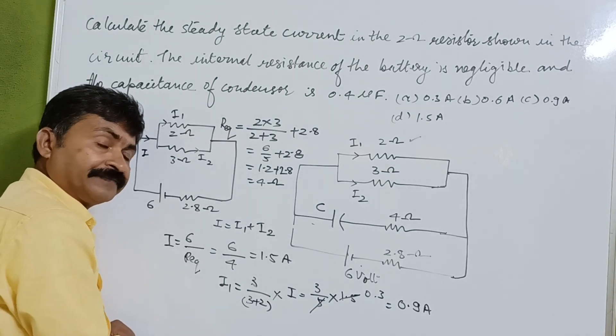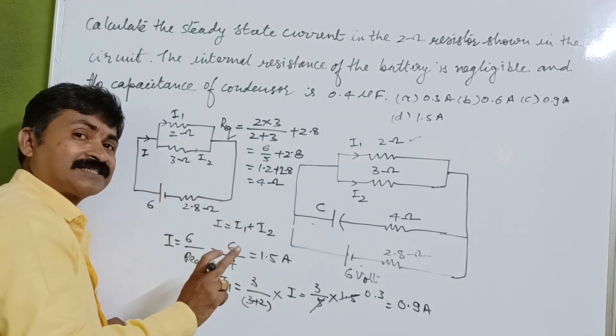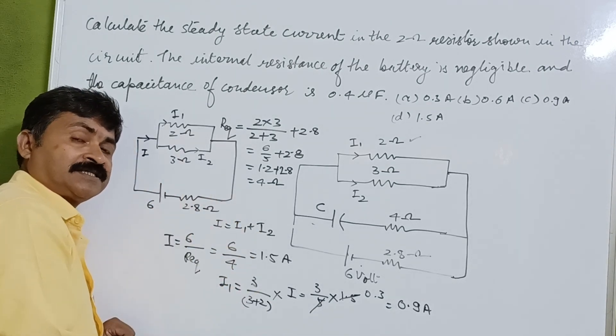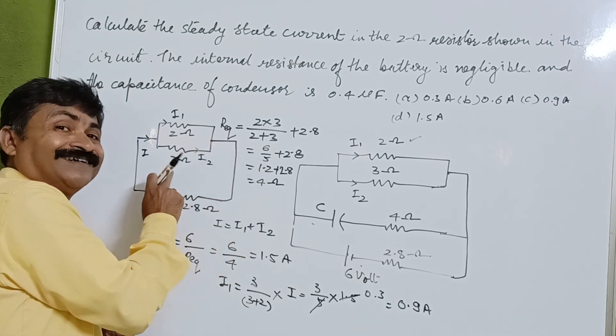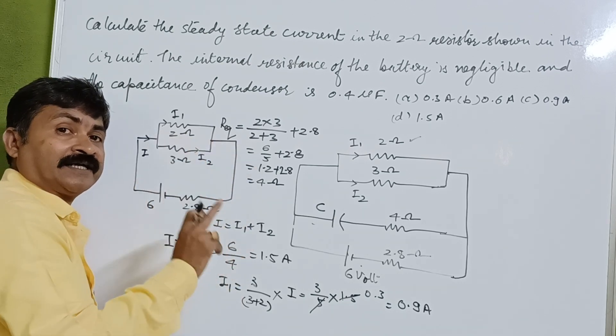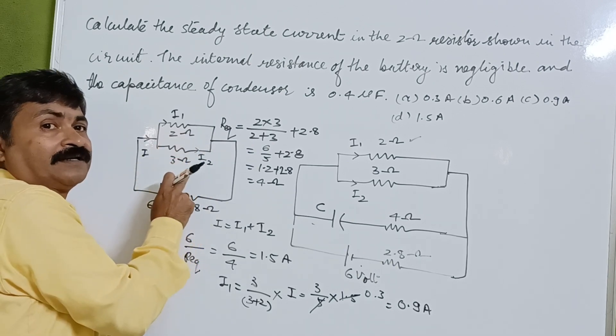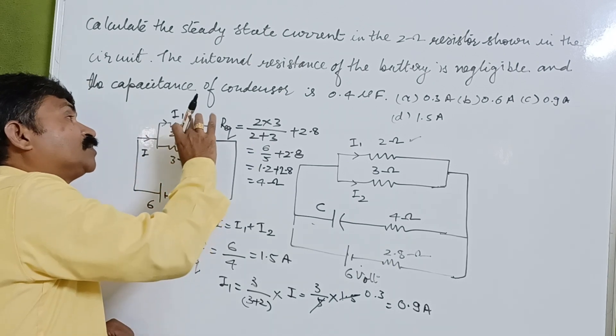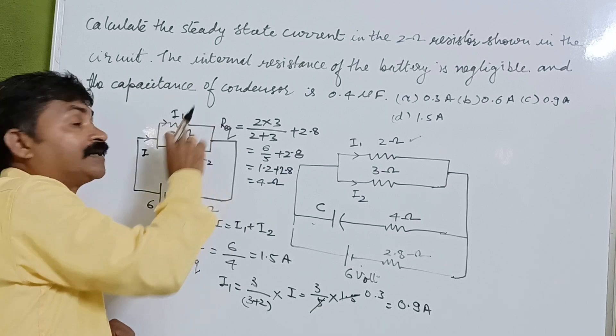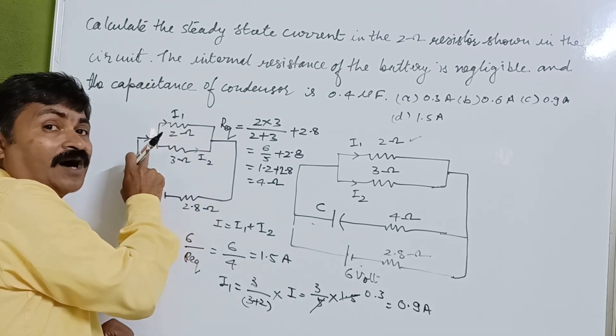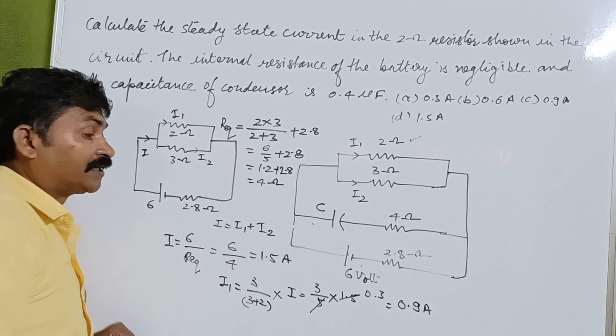We can solve the resistance in parallel, resistance in series, we can use current division method, a simple method, so you can use this branch resistance and total resistance divided by total current which is coming from the circuit.